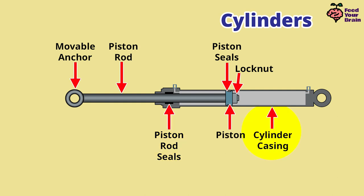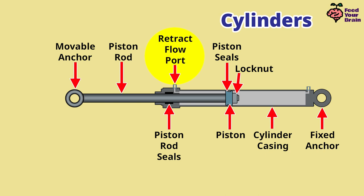This edge here is the cylinder casing. Since the cylinder housing is fixed to an excavator part that does not move, this anchor is called the fixed anchor. This here is a port where a tube is connected for the incoming flow of pressurized hydraulic fluid. When this end of the cylinder is filled with pressurized hydraulic fluid, it pushes against the piston, making the piston rod move into the cylinder — so this port is called the retract flow port. The other port, when filled with pressurized hydraulic fluid, pushes the piston out of the cylinder, extending the piston rod — so this port is called the extend flow port.